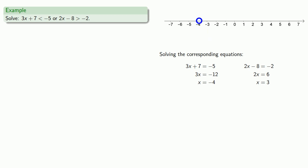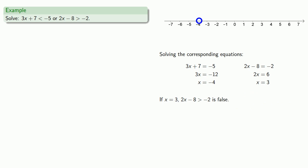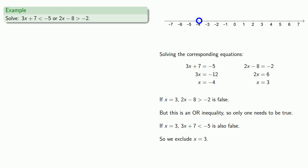We'll check the other critical value. If x equals 3, 2x minus 8 greater than negative 2 is false. Again, because this is an OR inequality, only one needs to be true, so we'll check the other one. If x equals 3, 3x plus 7 less than negative 5 is also false. So we exclude x equals 3 from our solution. Since x equals 3 is a critical value but it's excluded, we'll put an open circle at 3.